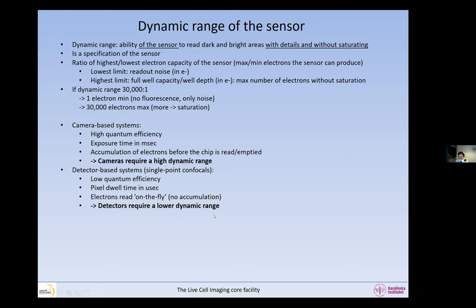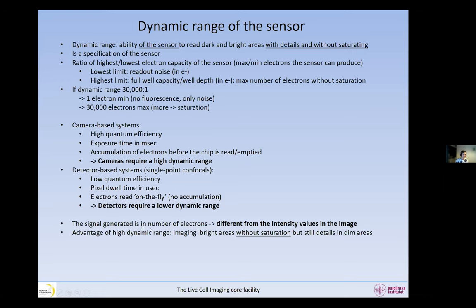It's okay for a detector to have a low dynamic range, but for cameras we need a high dynamic range. The signal is generated as number of electrons — the highest and the lowest — inside the sensor. This is not the same as the intensity values in the image. The dynamic range is a characteristic of the sensor; it's different from the intensity in the image.